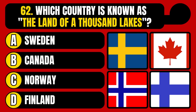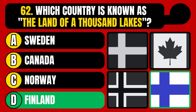Which country is known as the land of a thousand lakes? Sweden, Canada, Norway, or Finland? The correct answer is option D, Finland.